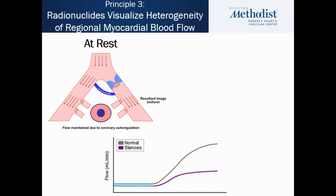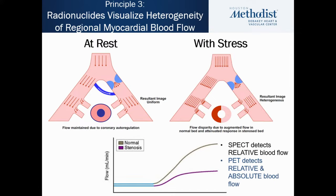This is a graphic representation of that. At rest, even with a stenosis, flow will generally be preserved. The radio tracer deposits in proportion to flow and you get a homogeneous perfusion picture. During stress, areas served by a normal artery get a lot of flow and a lot of radio tracer deposition. But once you have a significant blockage, you'll have a pressure drop across that stenosis, flow will be reduced, less radio tracer will be deposited, and in your qualitative images you'll see a relative perfusion deficit.